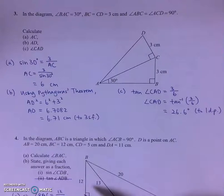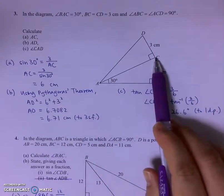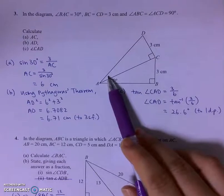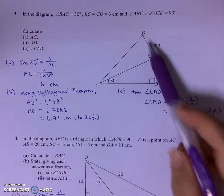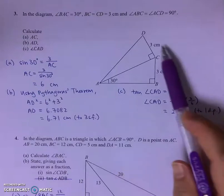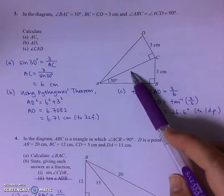For part C, they want us to find the angle of CAD. So I'll make use of the right-angled triangle CAD. Use what I know, which is 3 and 6 cm. You can use tangent.